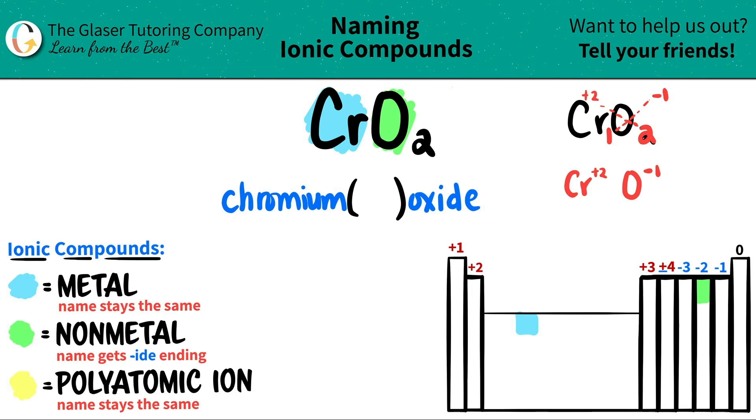But now you just have to do a check. Does this make sense? Well, oxygen always wants to be a negative two. It's in the negative two group for oxidation trends, but it's a negative one here. But I can fix that by multiplication. If I just times this by two, I can get the negative two. But I got to be fair. Whatever I do to this, I have to do to the other one. And plus two times two is a plus four. That is the charge of chromium.